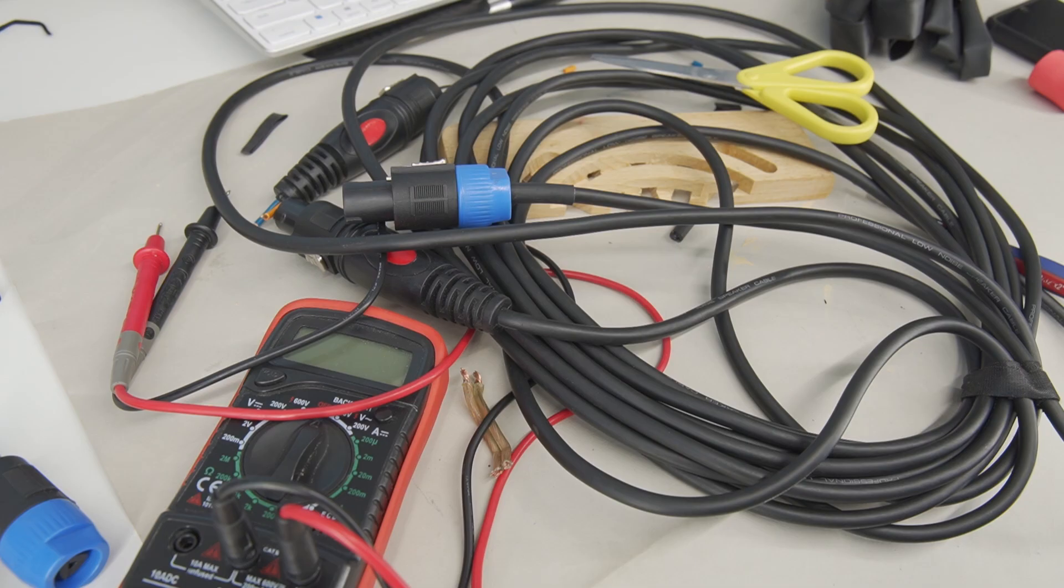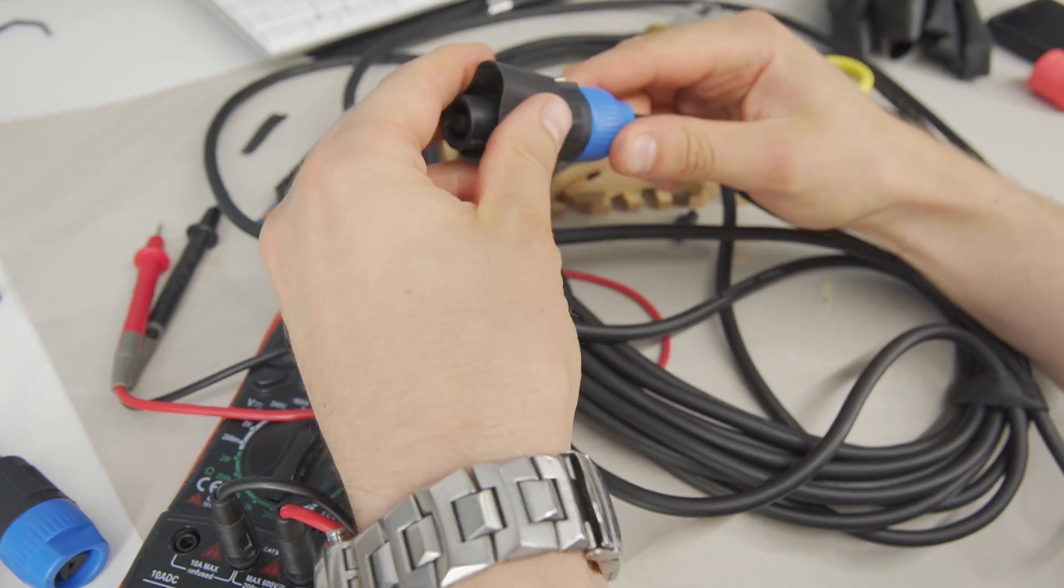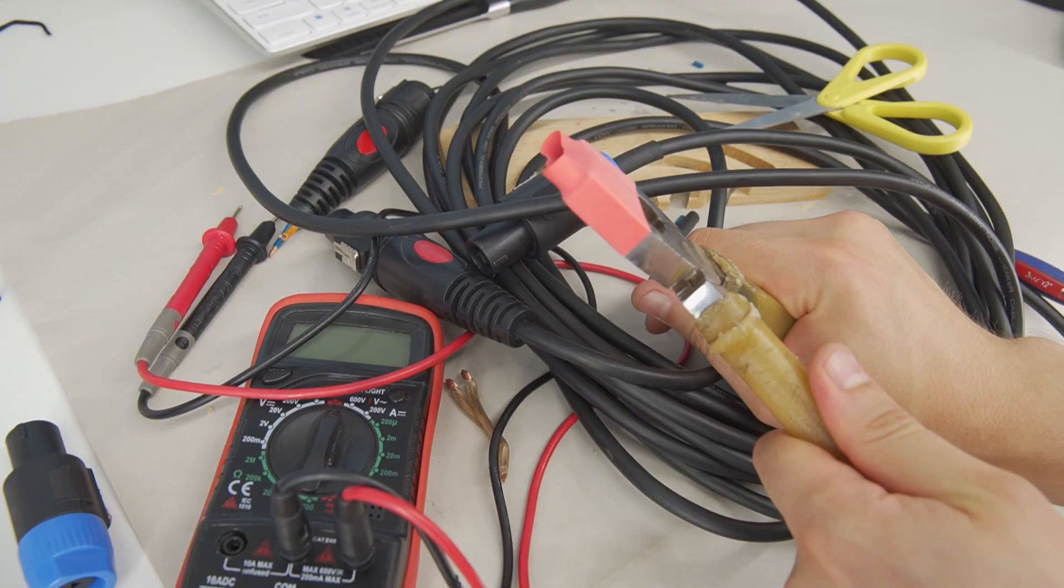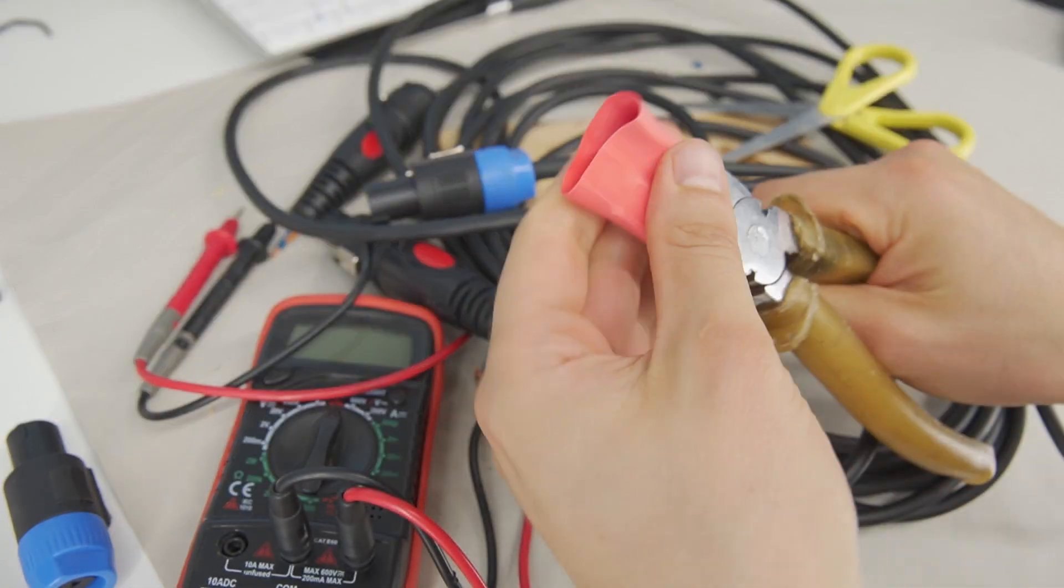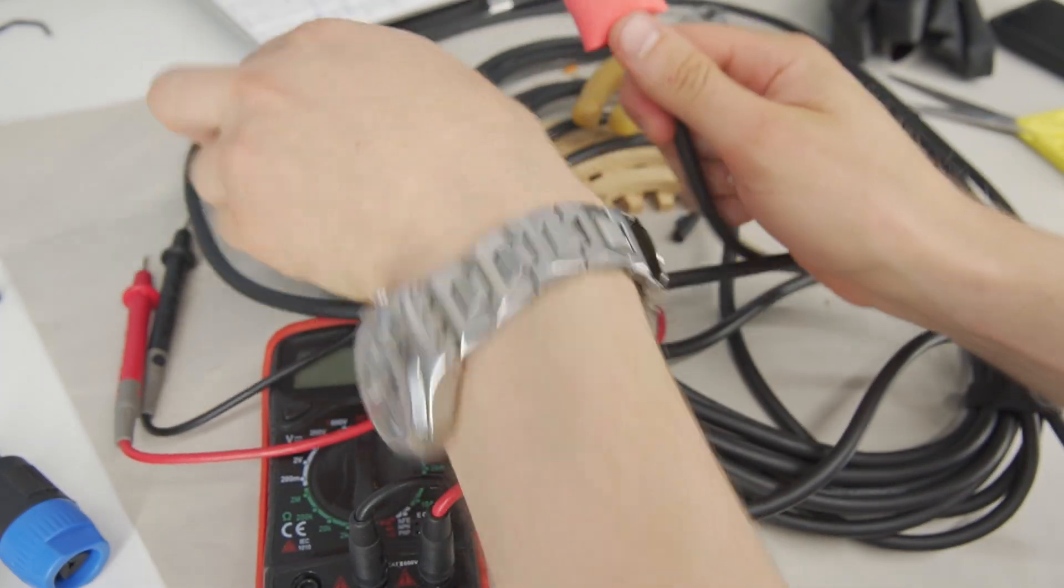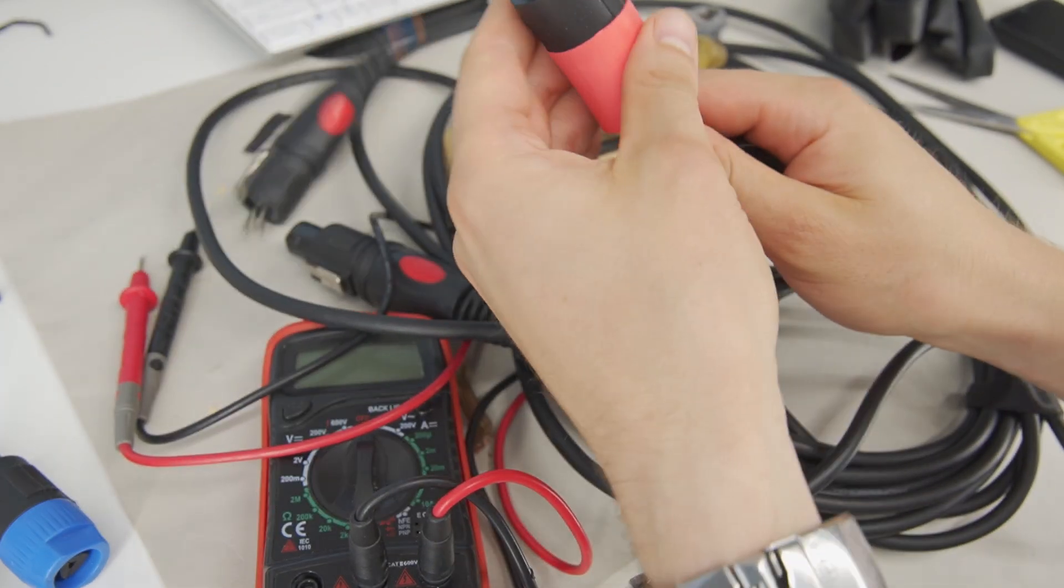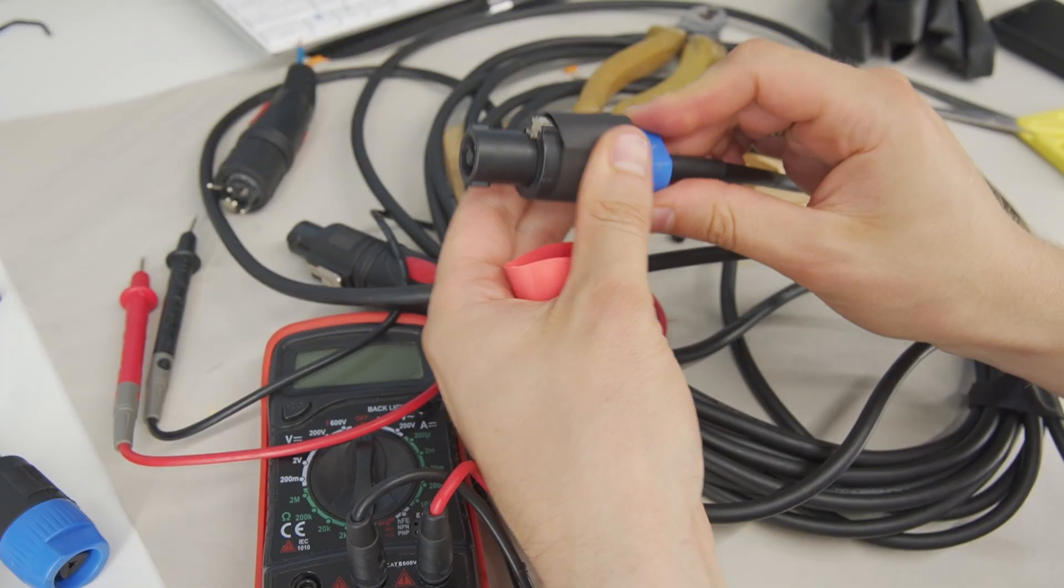If you want to mark cables for left and right channels, you can use larger heat shrink tubing just stretched with pliers and placed on the connector. This makes it easy to identify the channels later. I hope this video teaches you something new.